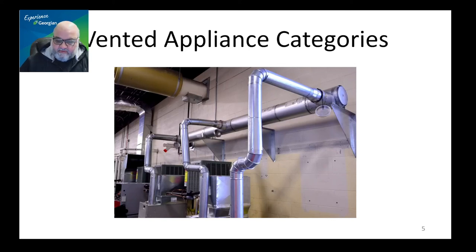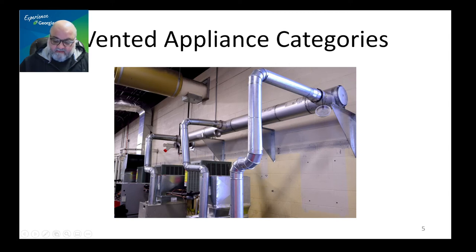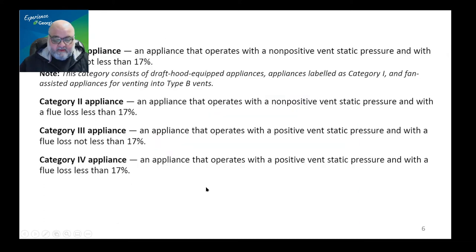And finally, in the first chapter, we are going to mention the vented appliance categories and how appliances are categorized. As you can see in this image, we have type C vent connectors that are attached to a type B vent manifold. And for the trained eye, this will tell what is the category of the appliance connected to the venting system. So let's find out how we categorize appliances.